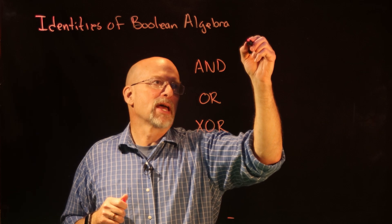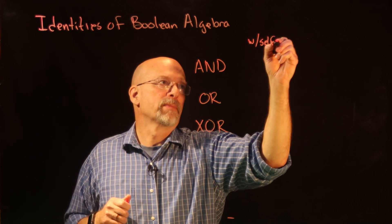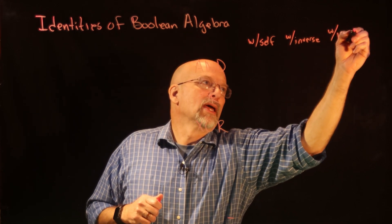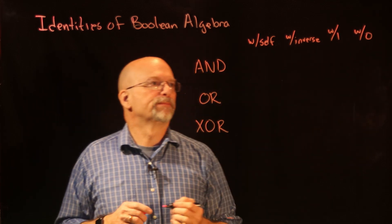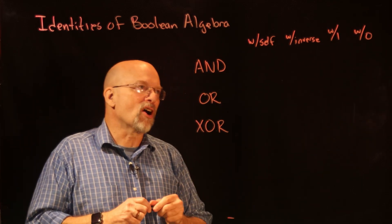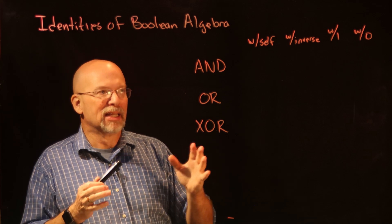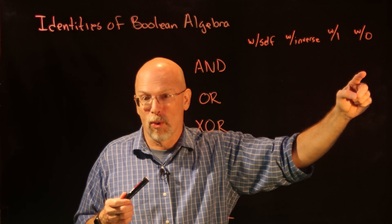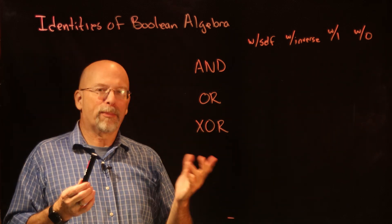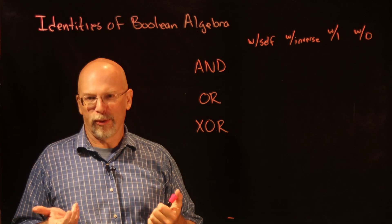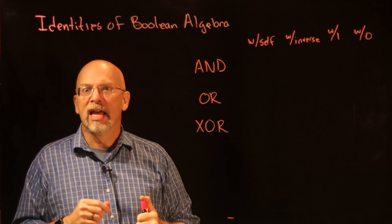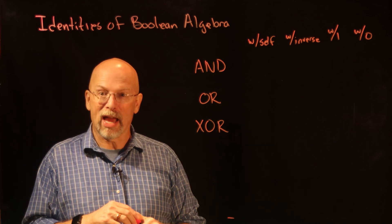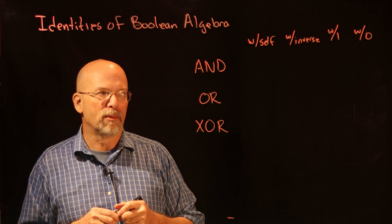We're going to build an identities of boolean algebra table to see the uniqueness these logic operations give us. I'll make columns: with self, with inverse, with one, and with zero. These are the different ways we combine things — anything ANDed, ORed, or exclusive ORed with zero, one, itself, or its inverse. We'll prove each one with a truth table, because in boolean algebra it's easy to enumerate all possible input combinations.